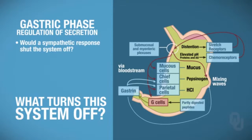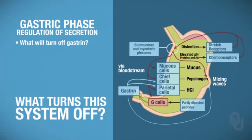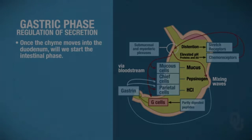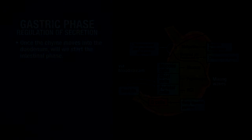A sympathetic response would also shut the system down. Acidity in the lumen of the stomach specifically inhibits gastrin production. As the chyme moves from the stomach into the duodenum, the intestinal phase then takes place.